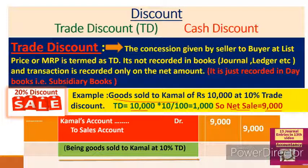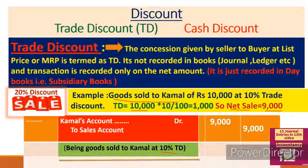We know goods have been sold — two accounts are affected: sale and purchase details. Let's understand the entry carefully. Kamal is a personal account — he is the receiver of the goods. Under personal account, the receiver's account is debited, so Kamal's account is debited. Next, sale account — sale represents goods; when goods go out, it is a real account, and 'what goes out' is credited. So sale account is credited. The net amount is shown — being goods sold to Kamal at 10% trade discount.